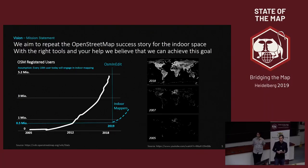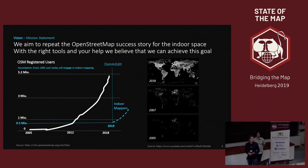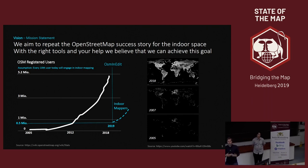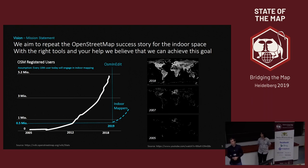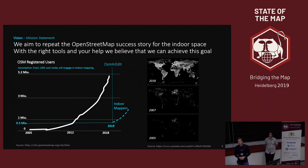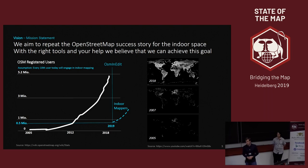OSM is an incredible success story. Today there are over five million registered users, and these pictures tell the story of how successful it was — the entire world was mapped within a short time. What we want to do is repeat that story indoors, because buildings are the black spots on the map today. We think mapping only happens with good tools, so that's why we developed one.